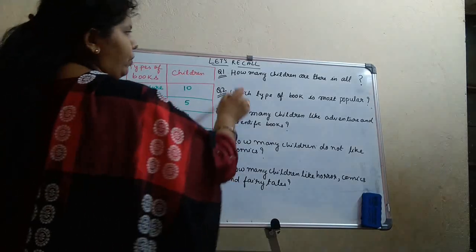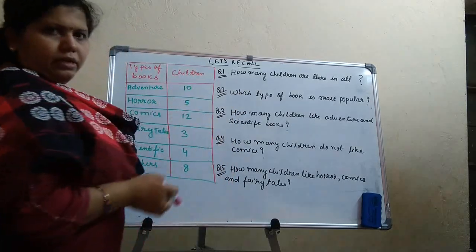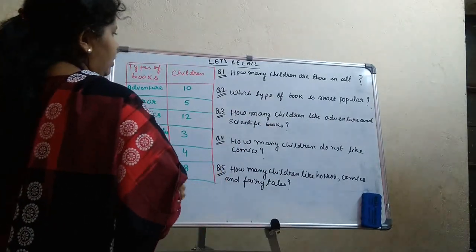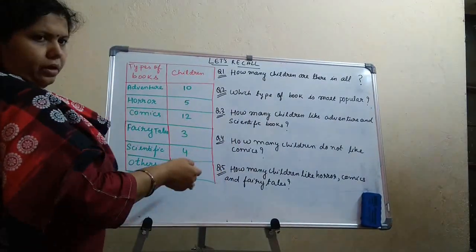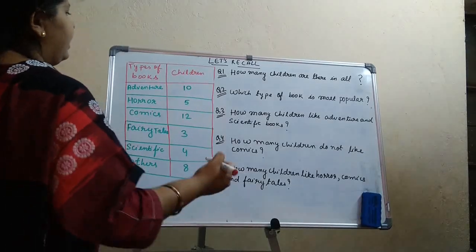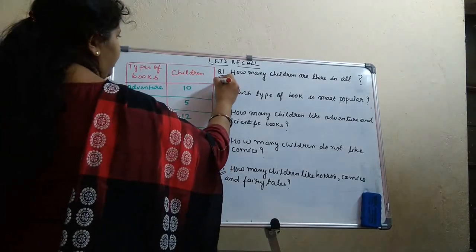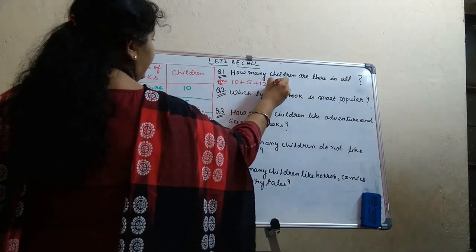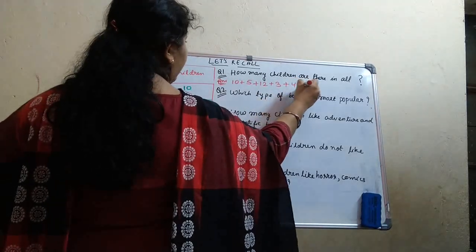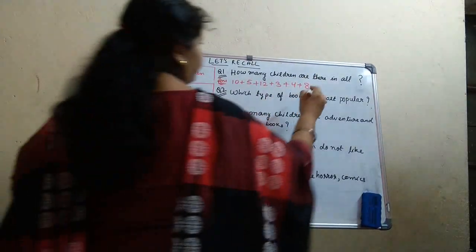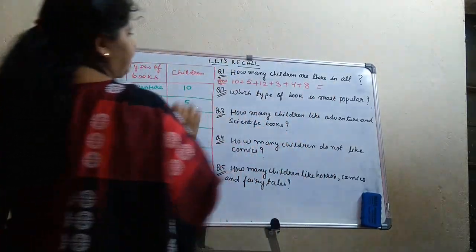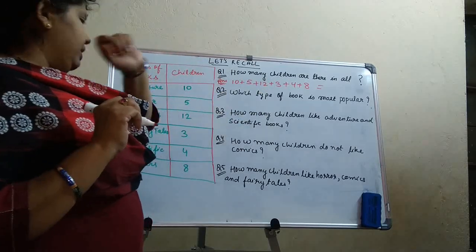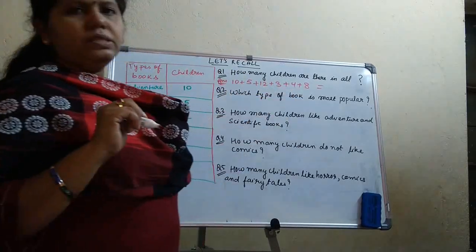Now let us solve the questions based on the data. How many children are there in all? So let us count the numbers in the children column: 10 plus 5 plus 12 plus 3 plus 4 plus 8. 10 plus 5 is 15, 15 plus 12 is 27, 27 plus 3 is 30, 30 plus 4 is 34, 34 plus 8 is 42.